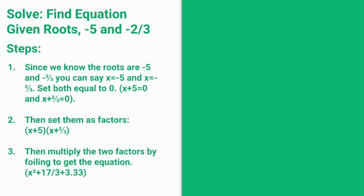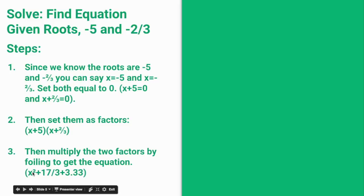Now you are going to multiply using FOIL, which means you multiply x by x, x by 2 thirds, 5 by x, and 5 by 2 thirds. Then you add like terms, and this gives you the equation x squared plus 17 over 3x plus 3.33.